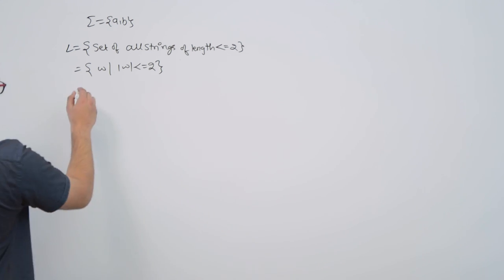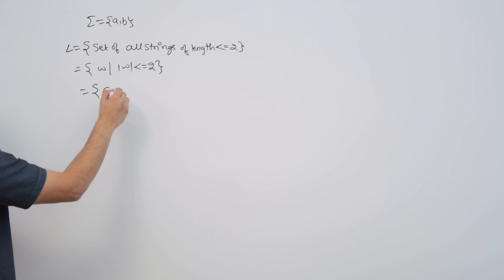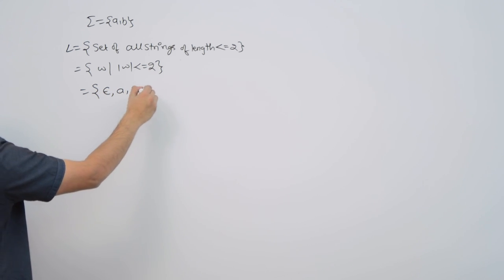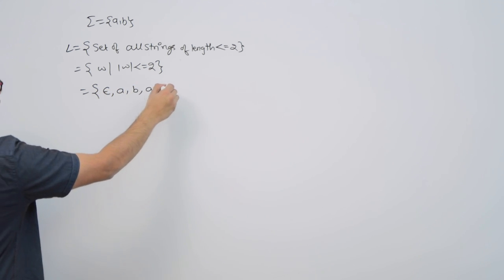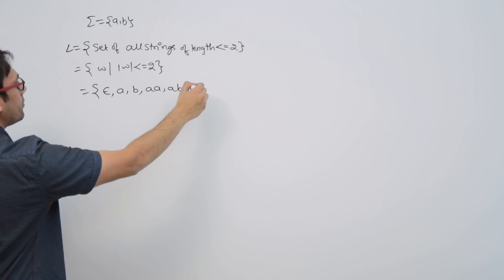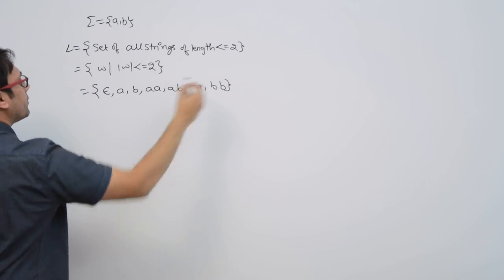So what are the strings present in this language? The strings will be: epsilon, a, b, aa, ab, ba, and bb.